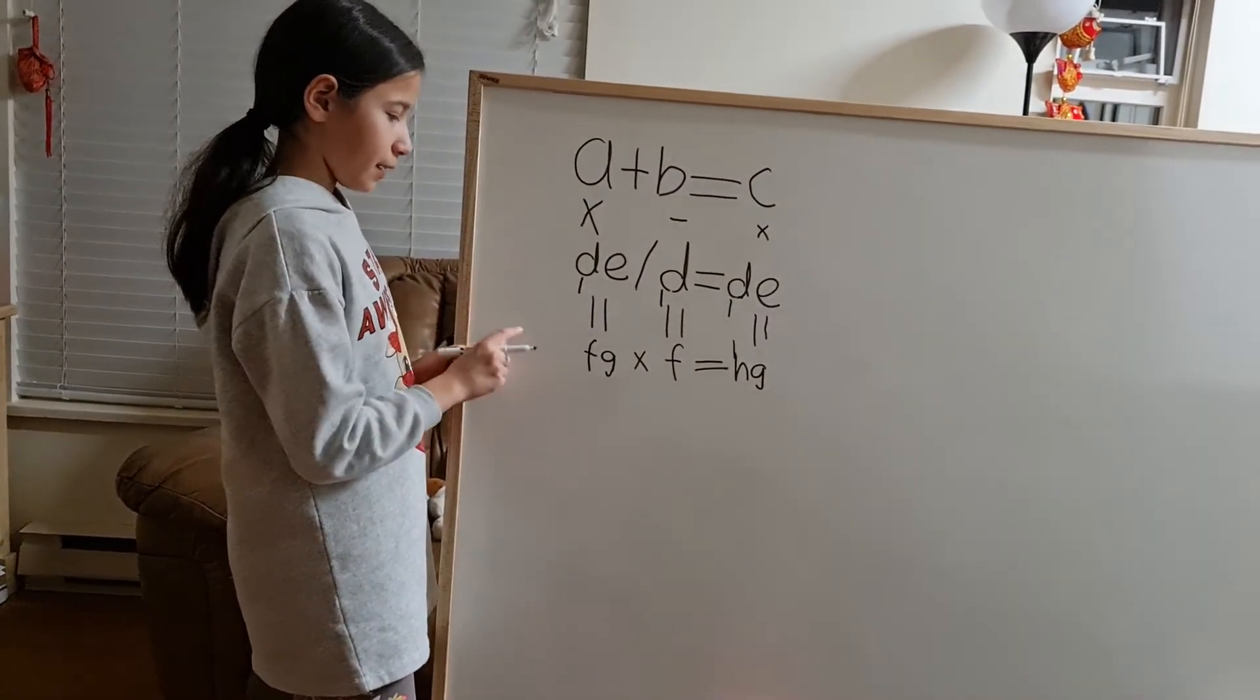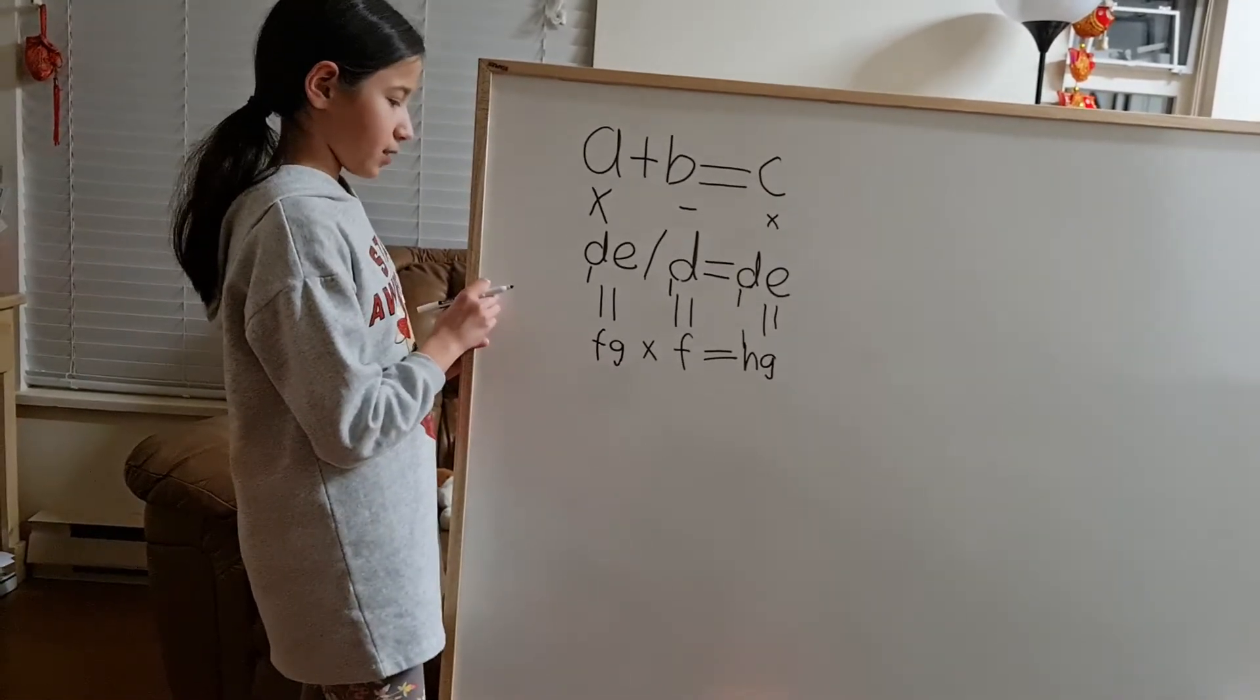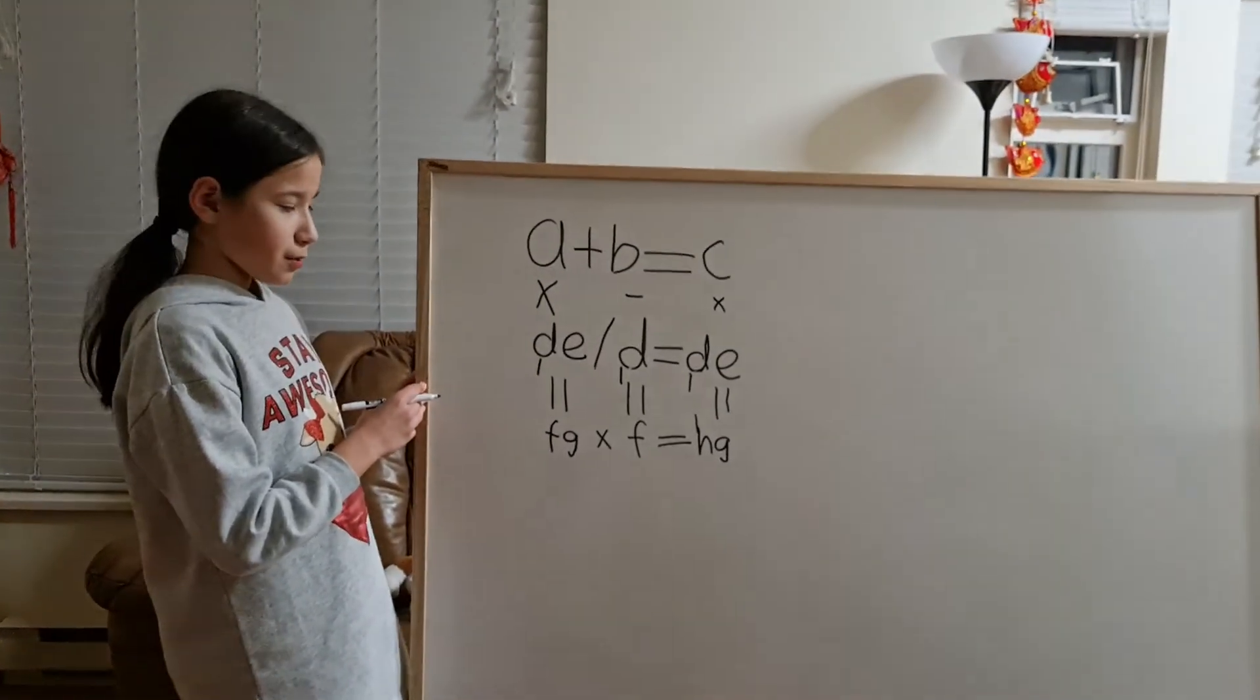F can't be 0 because it is in the tenth digit place. And it can't be 1 because it's already used. So it's either 2 or 3. I choose 3.